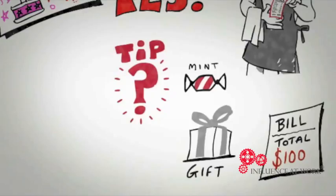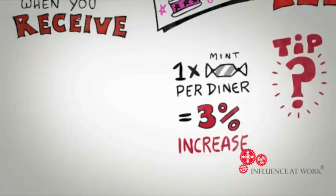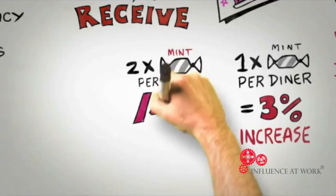In the study, giving diners a single mint at the end of their meal typically increased tips by around 3%. Interestingly, if the gift is doubled and two mints are provided, tips don't double—they quadruple, a 14% increase in tips.